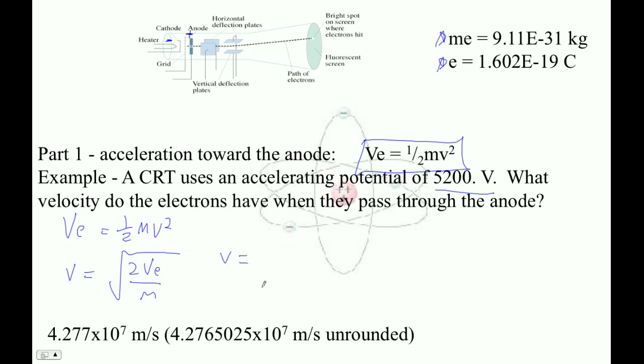Okay, so our velocity is going to be the square root of twice 5,200, and that's what, joules per coulomb is a volt, times 1.602 E minus 19 coulombs, and then that's divided by 9.11 E minus 31 kilograms. Okay, so let's do that.